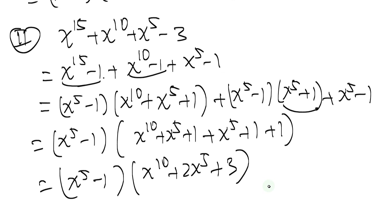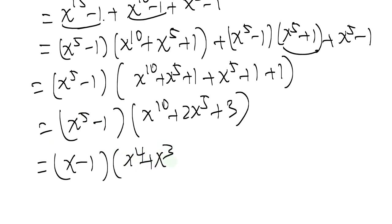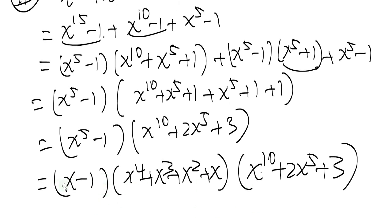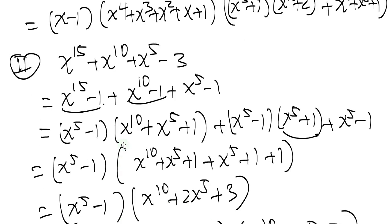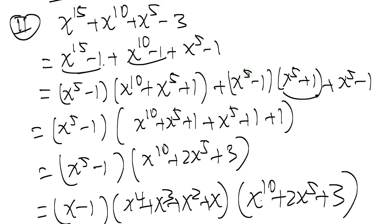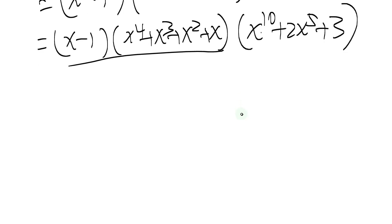Notice that the term (x to the 5 minus 1)(x to the 10 plus 2x to the 5 plus 3) appears in both the numerator and denominator, so these cancel. That's actually why we don't need to factor all the way down to (x minus 1) in the denominator — the simplification happens at this level.